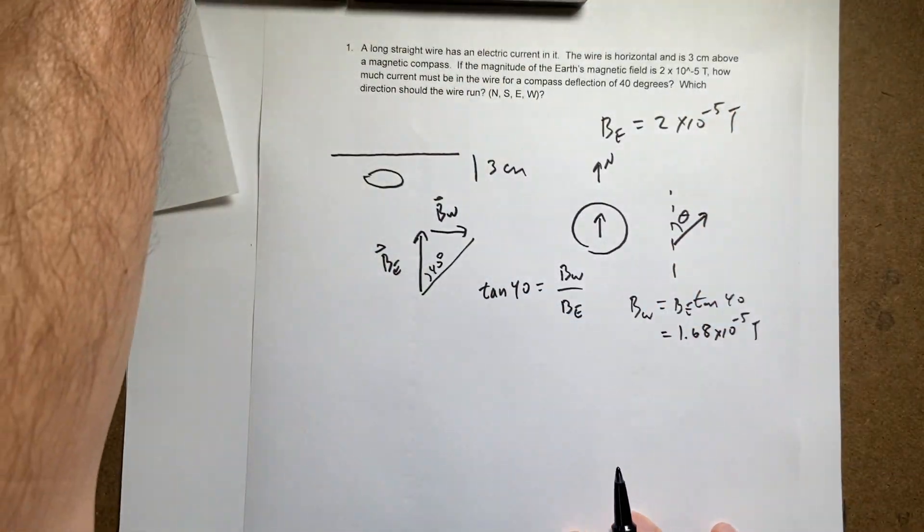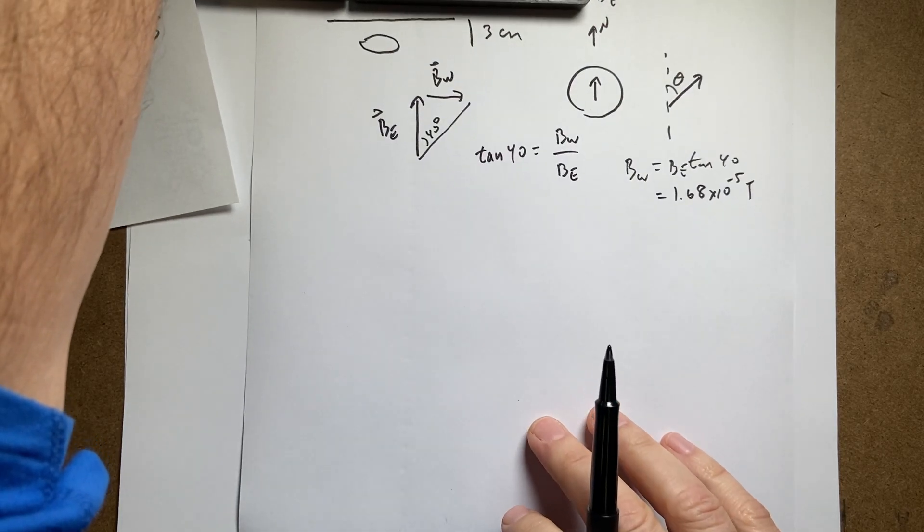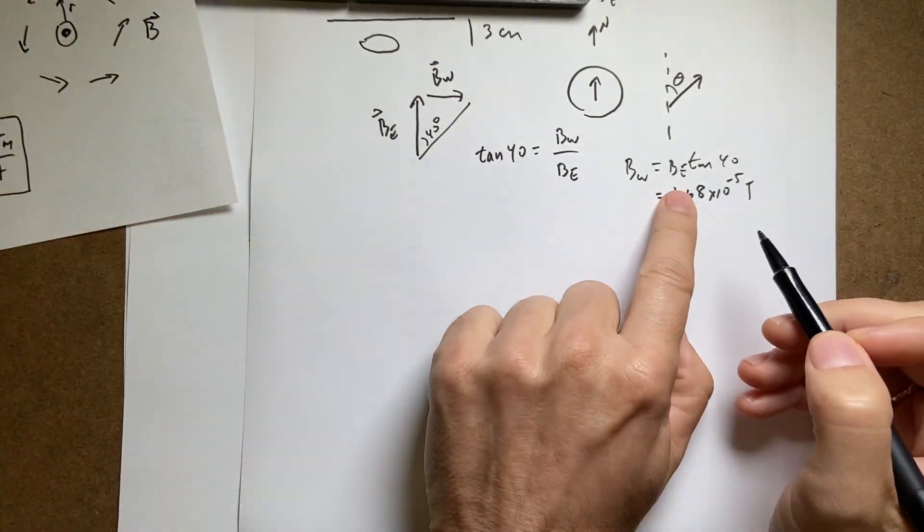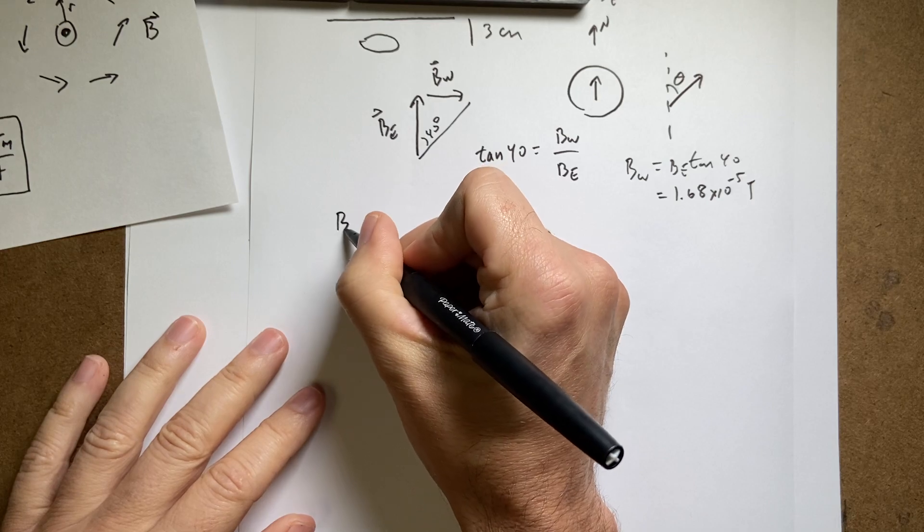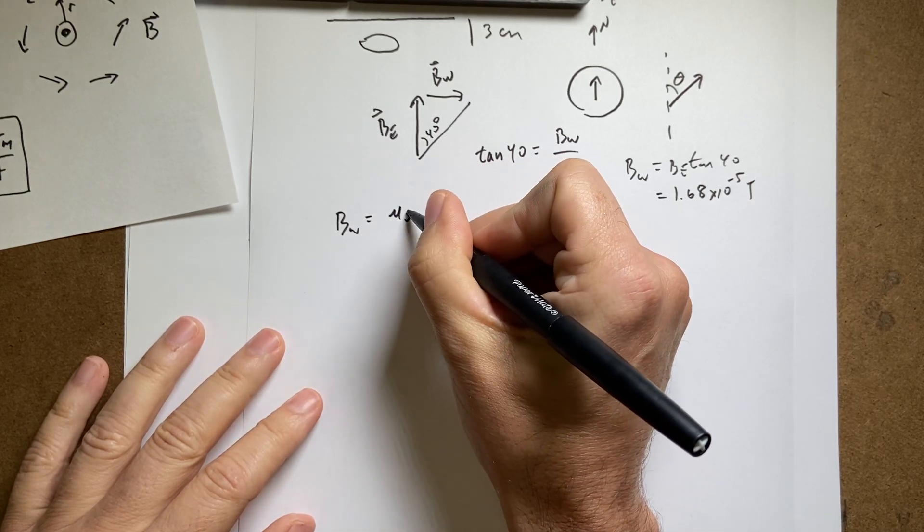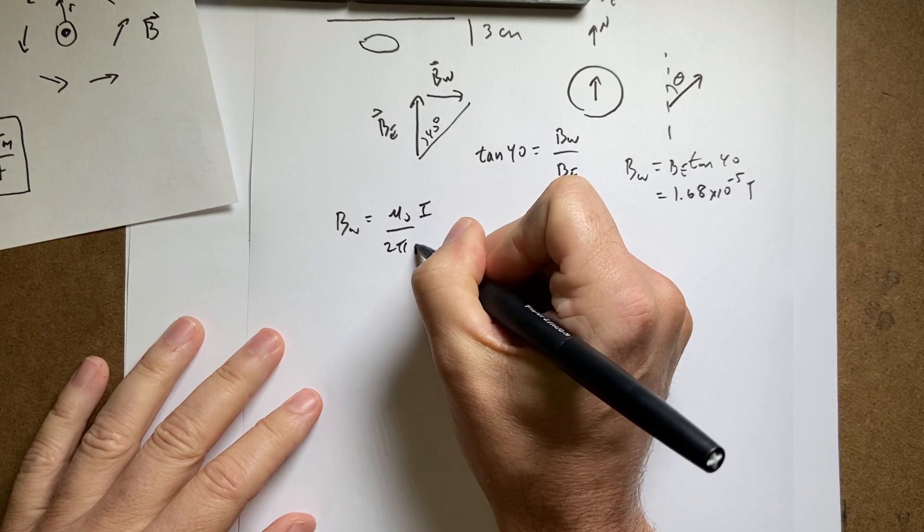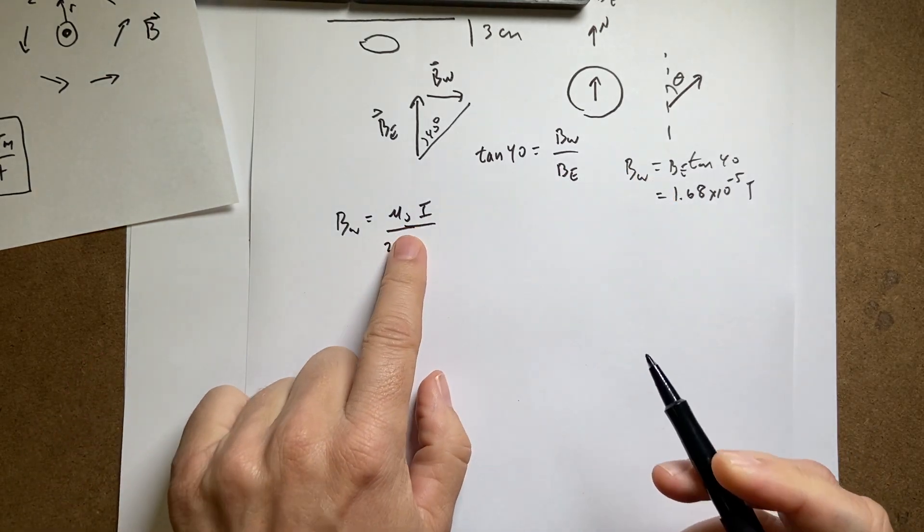Okay. So let's do that. Let's get this up. Okay. So I know this. B wire is mu naught i over 2 pi r. And I just want to solve for, that was right, the current. Yeah, the current. So I'm just going to solve this for the current.